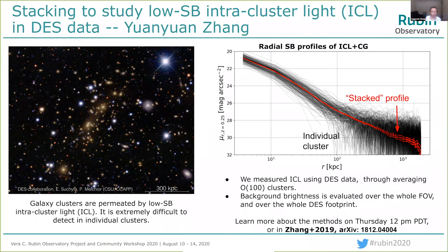I'm going to talk more about the methods on Thursday. But one thing I want to highlight is that using this averaging and stacking method also allows you to derive a stacked or averaged background that you can subtract from the measurements of hundreds of clusters. That gets rid of small scale fluctuations.